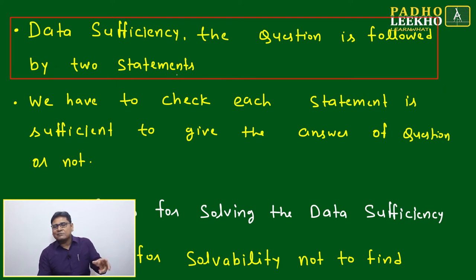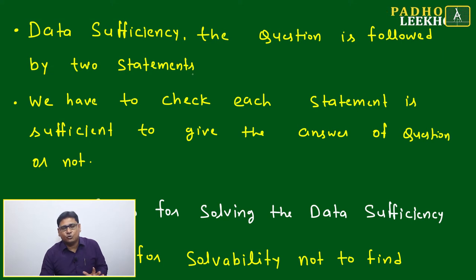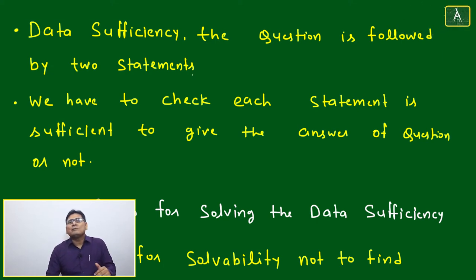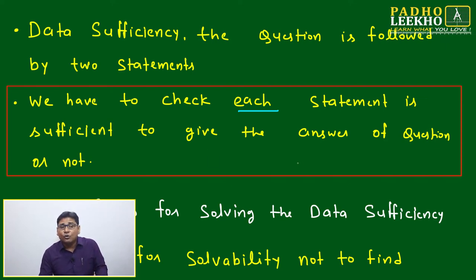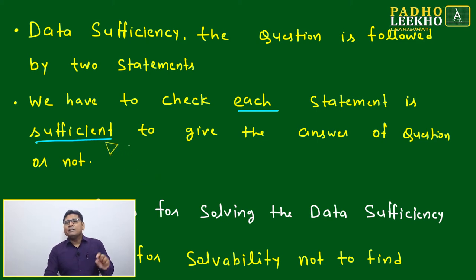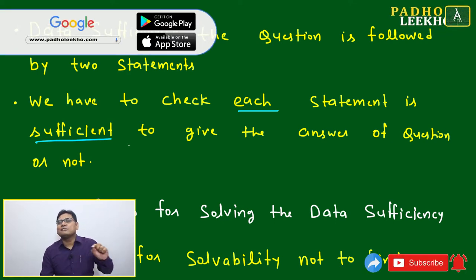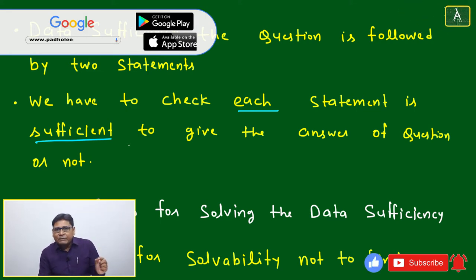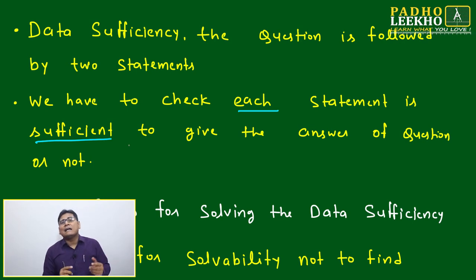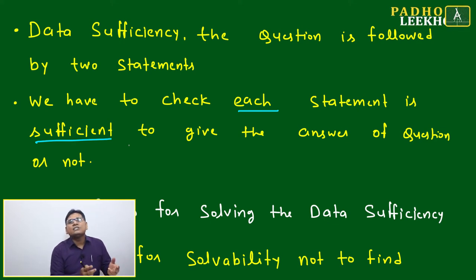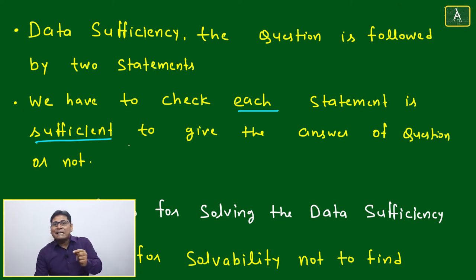In data sufficiency, the question is followed by two statements — that is the very ideal scenario. One question will be there and based on that, two statements will follow. We have to check whether each statement is sufficient to give the answer or not. We check only sufficiency: based on statement one or statement two — taken separately first, then together — is this question sufficient to get the answer or not? It is not asking you to find the solution; it is asking just to check whether the question is solvable or not. That is data sufficiency.